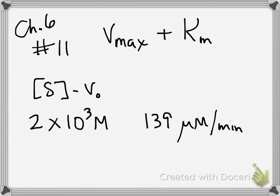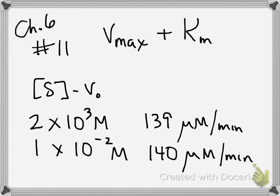The next substrate concentration used is 1 times 10 to the negative 2 molar. So that's quite a bit more substrate, but look, your velocity doesn't increase that much. You only go to 140 micromole per minute.